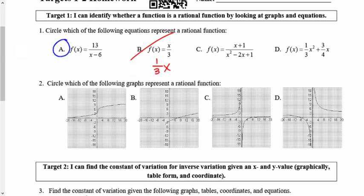C is a rational function. It's a really good example of when we have a linear equation on the top, and then we have a quadratic on the bottom, in the denominator. For D, D is not a rational function. We do not have x in the denominator in any of those fractions.